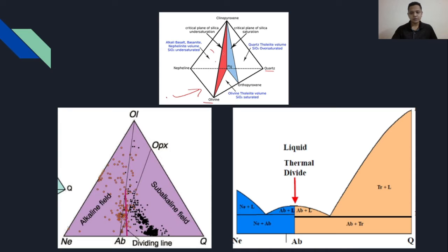One is the left side of this critical plane of silica undersaturation, one is in between these two planes of saturation, and one is the oversaturated or silica oversaturated region.